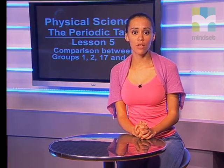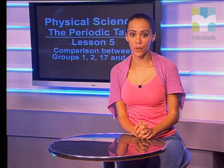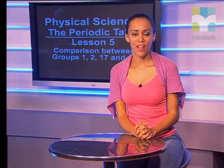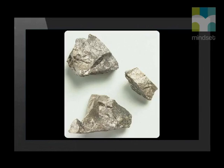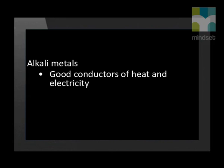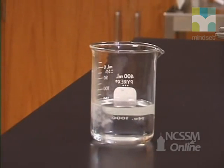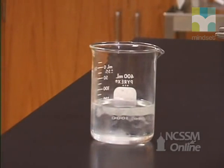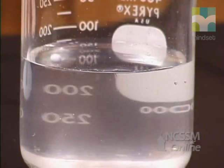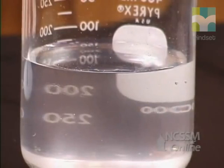Now let us look at the properties of each of these groups in more detail. We will start with group 1, the alkali metals. Alkali metals are soft metals with a shiny appearance. They are good conductors of heat and electricity. They have low densities and float on water. They are very reactive and thus do not occur naturally in nature as elements. Look what happens when sodium is put in water. When an alkali metal such as sodium reacts with water, it forms hydrogen gas and a metal hydroxide.